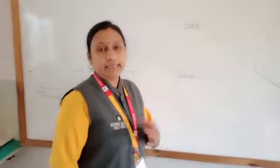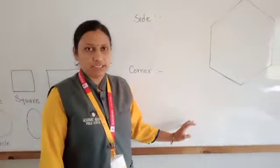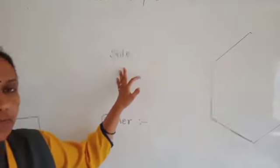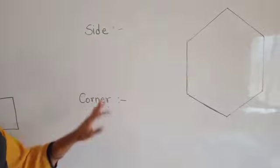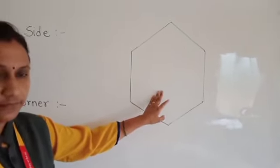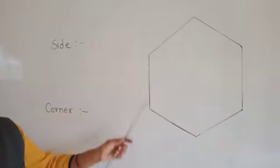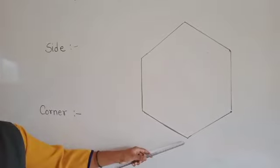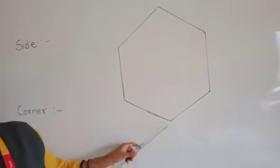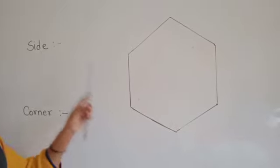Before going to learn about the details of our plane shapes, we have to know the new terms which describe plane shapes: side and corner. I will draw one figure here. The first thing is the side. Side means the boundary line of that figure, or edges of the figure. Edges or boundary lines are known as the side.